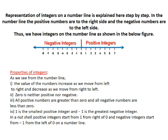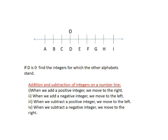Now, I am going to give a small question on number line. See, I have drawn one number line on the board and it is named as A, B, C, D, E, F, G, H, I. And if D is 0, find the integers for which the other alphabet stands.